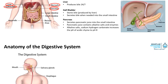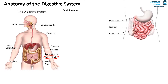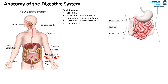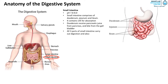Next, the small intestine. It has a pH of 7.8 to 8. The small intestine comprises the duodenum, jejunum, and ileum. It contains villi for absorption. The duodenum receives pancreatic juice from the pancreas and bile from the gallbladder. All three parts of the small intestine carry out digestion and absorption of nutrients.